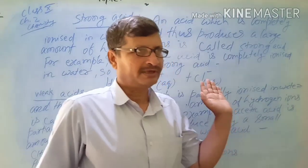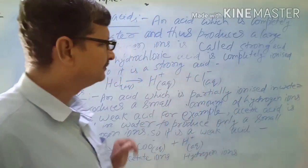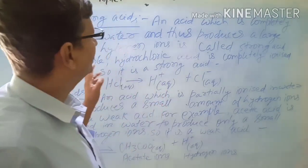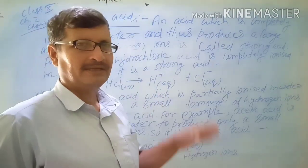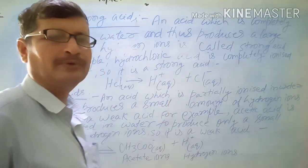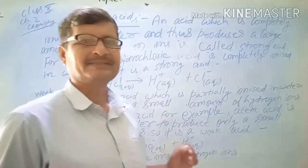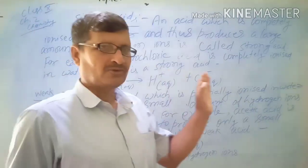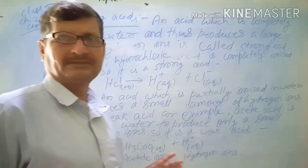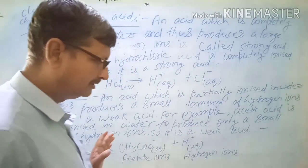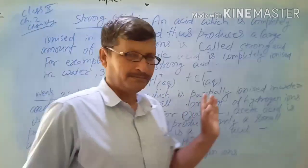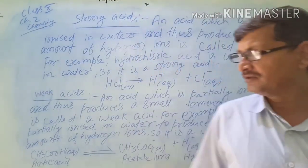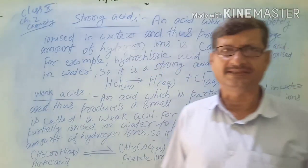For example, strong acids include HCl, H2SO4, and nitric acid. These all are strong acids. Mineral acids are generally strong acids.